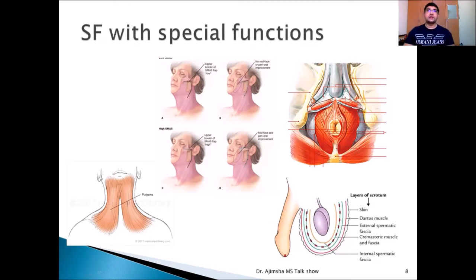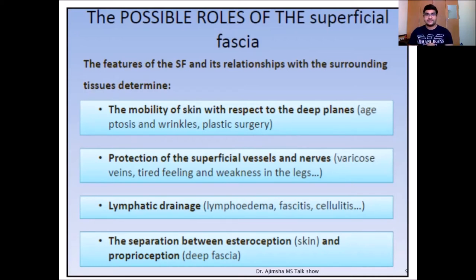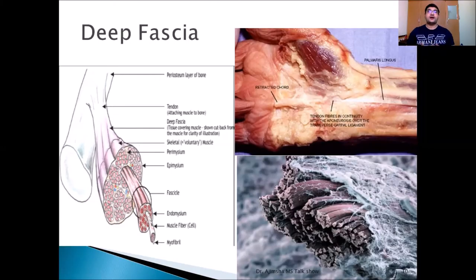These are superficial fasciae with specialized contractile functions — for example, the platysma, which you can see as a neck mass when you clench the teeth. The possible roles of the superficial fascia, according to Stecco, include mobility of the skin with respect to the deep planes, protection of superficial vessels and nerves, lymphatic drainage, and the separation between exteroception and proprioception.